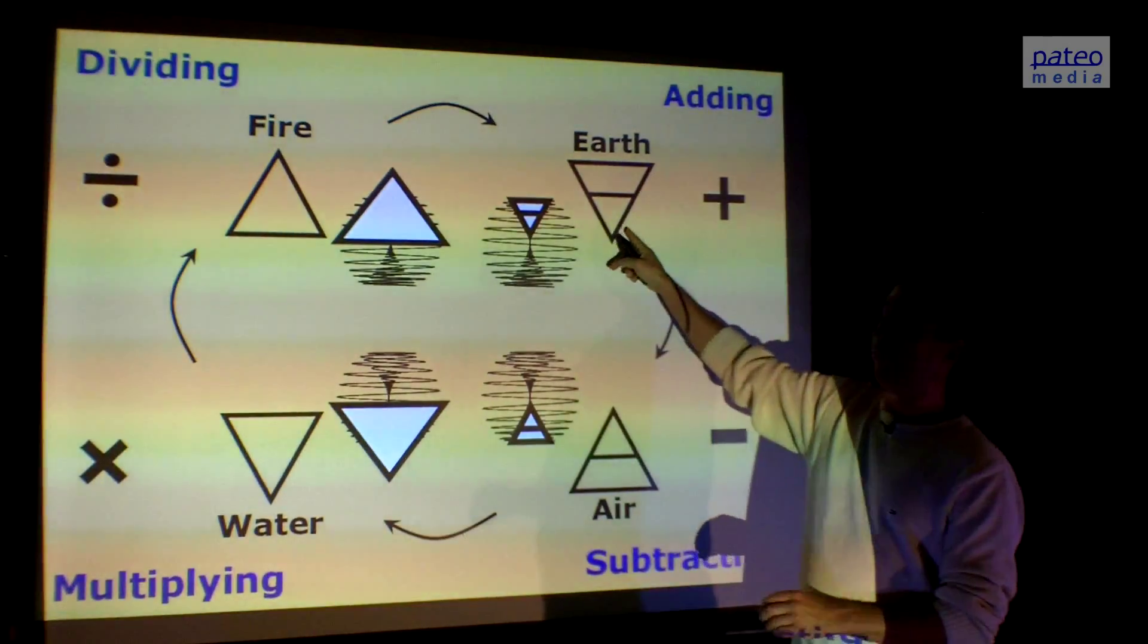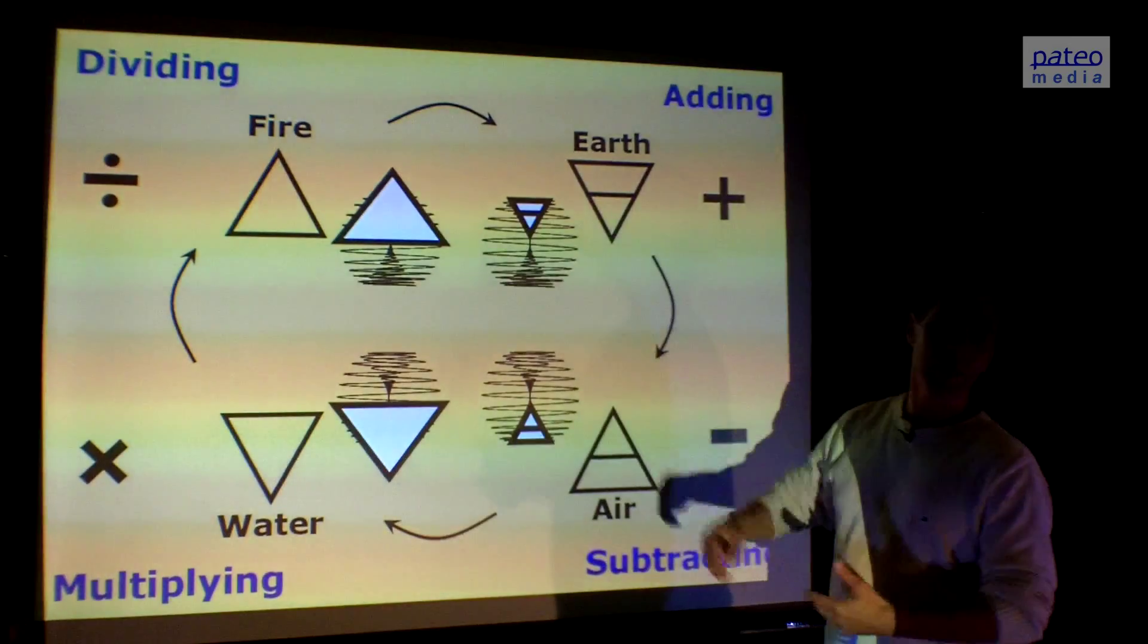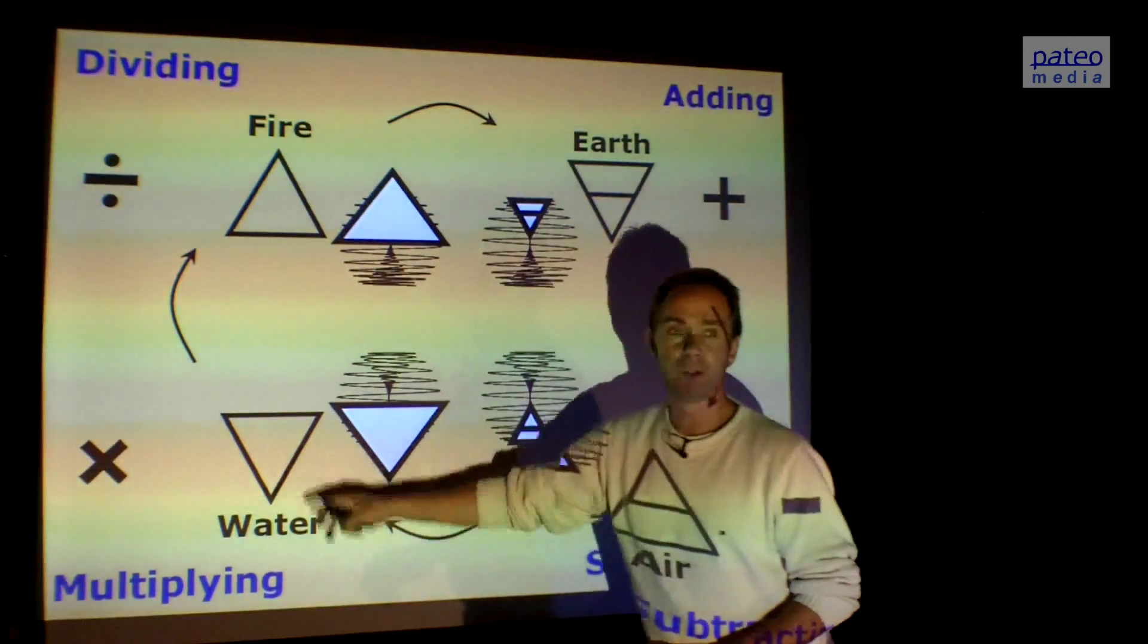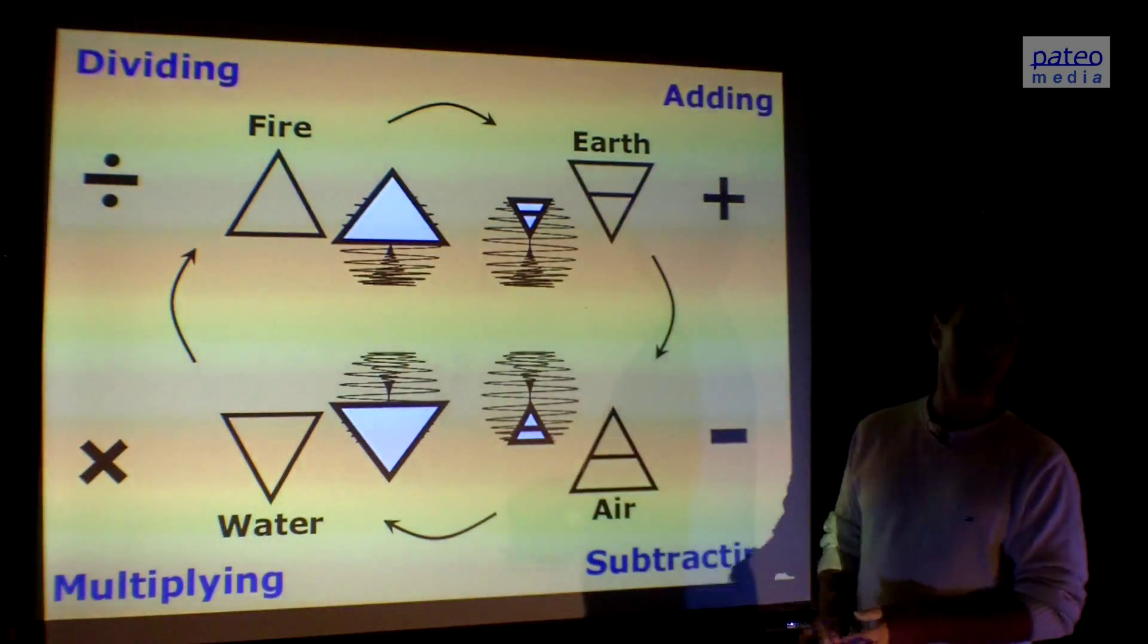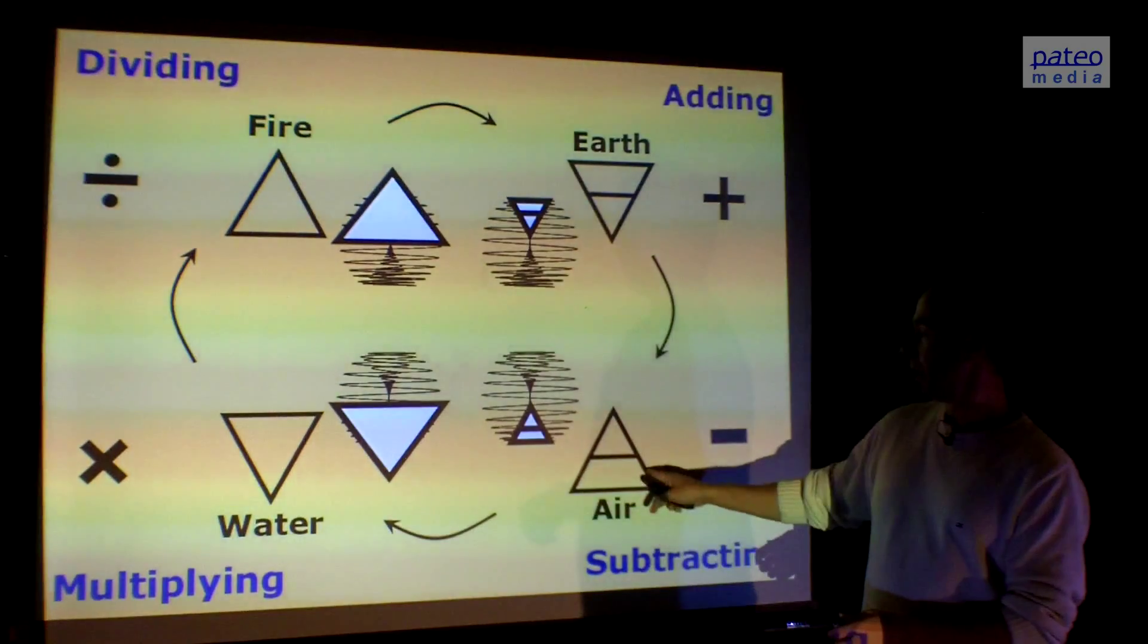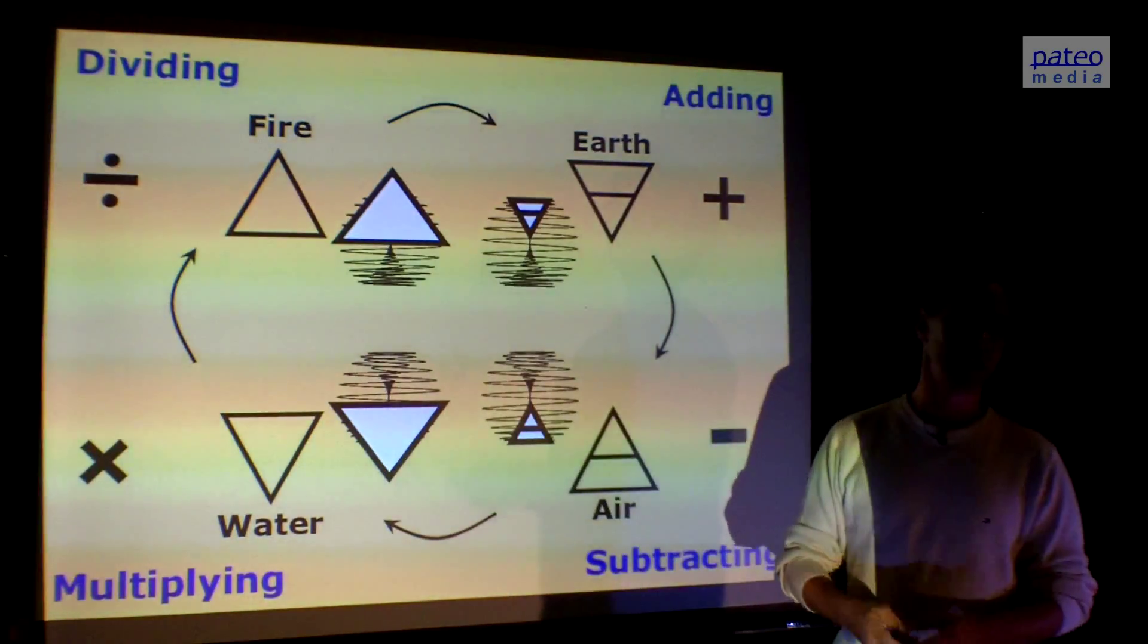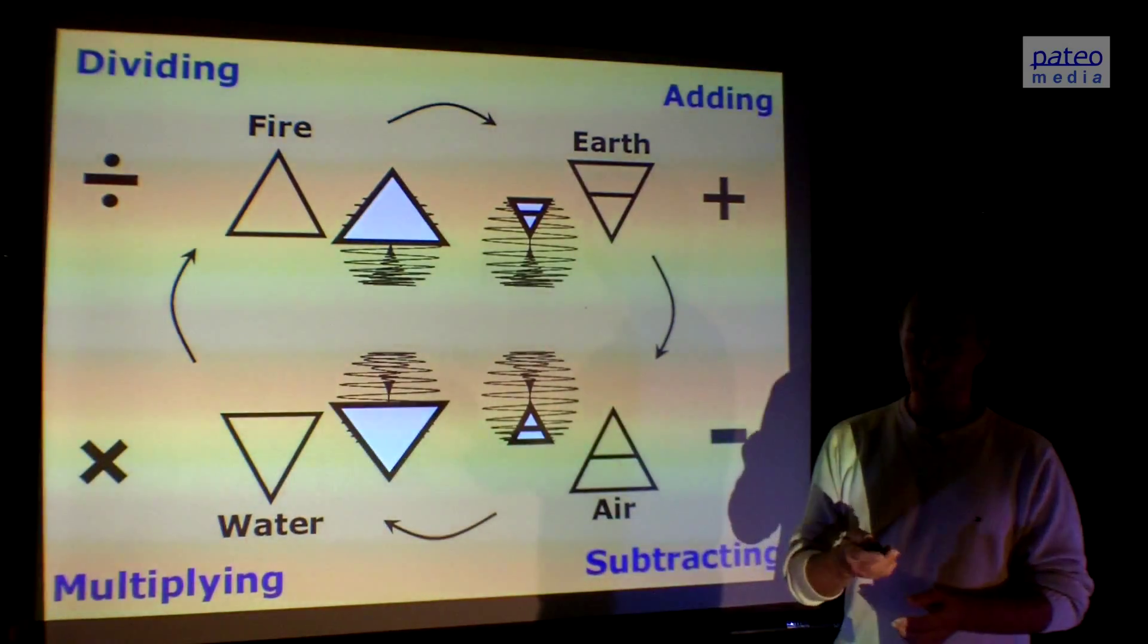These are the female, the positive signs. Adding makes more and also multiplying makes more. These are the negative signs, the male signs, the yang signs. Making it less - by subtracting you make it less, by dividing you make it also less. So you can see the meaning of yin and yang back in these four symbols.